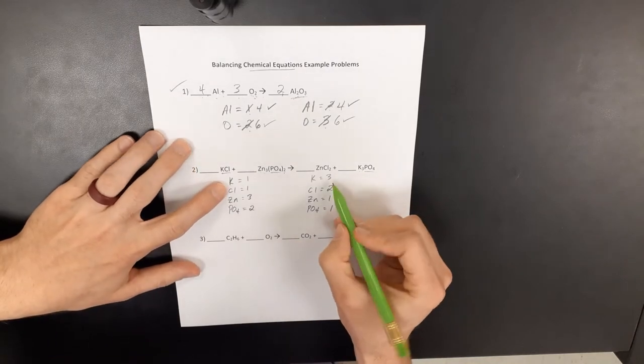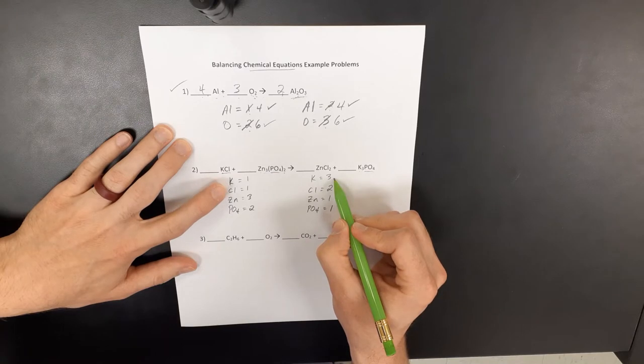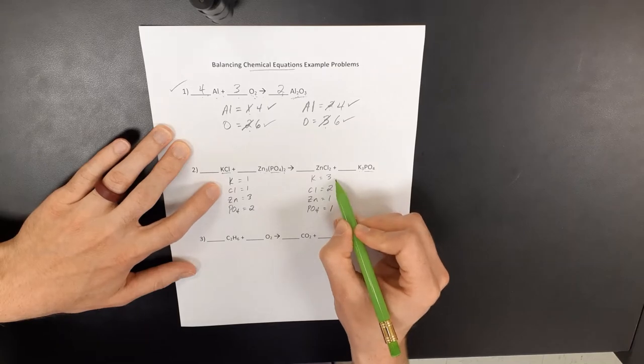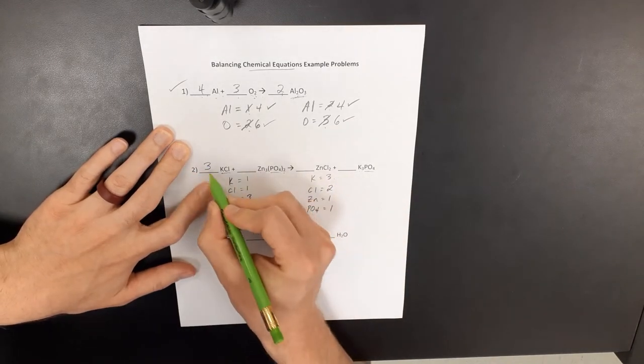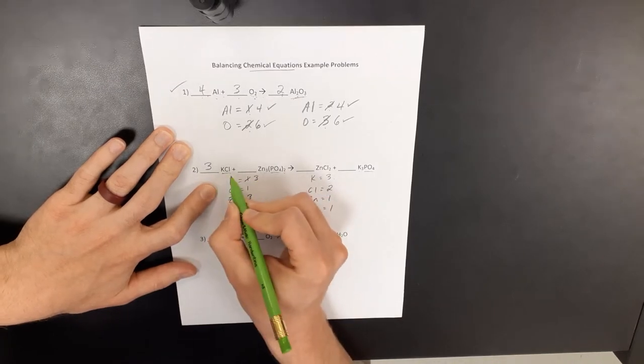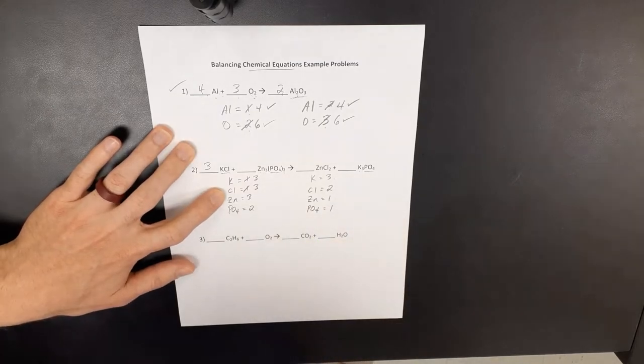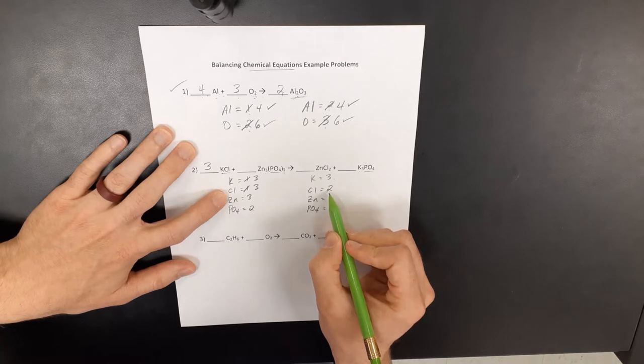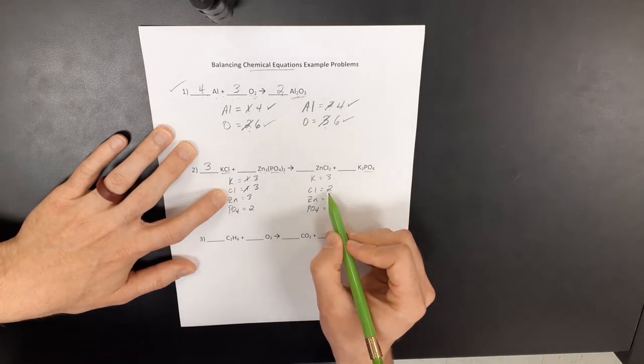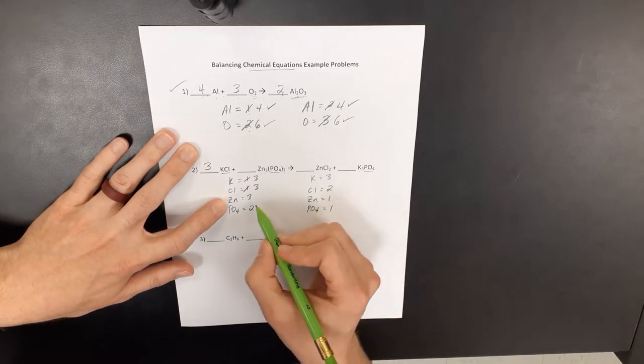So there are several places we could begin here. We could start with right here at the potassium at the top of the list. We got three on the product side, only one on the reactant side. So we could say, okay, well, I got three over here, I'm going to need at least three on this side. And so three times one is now three, three times one also now have three chlorines.